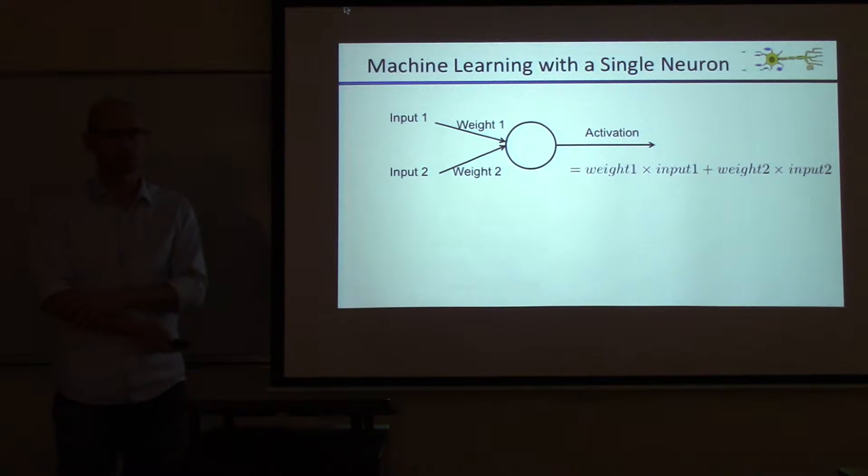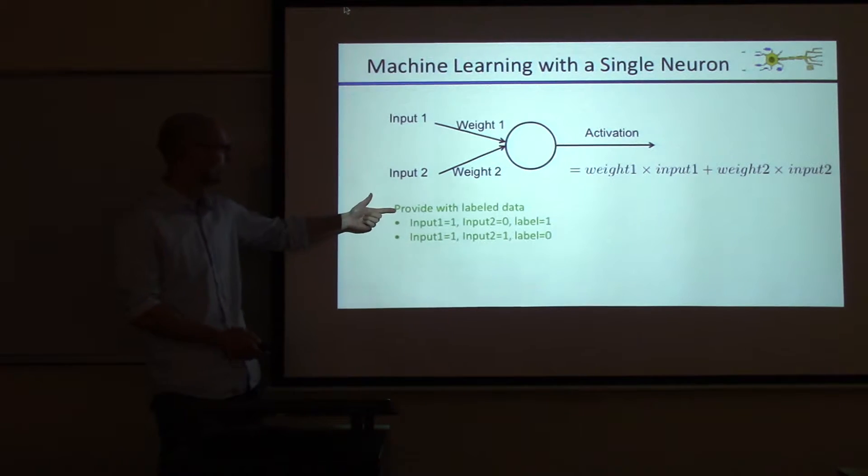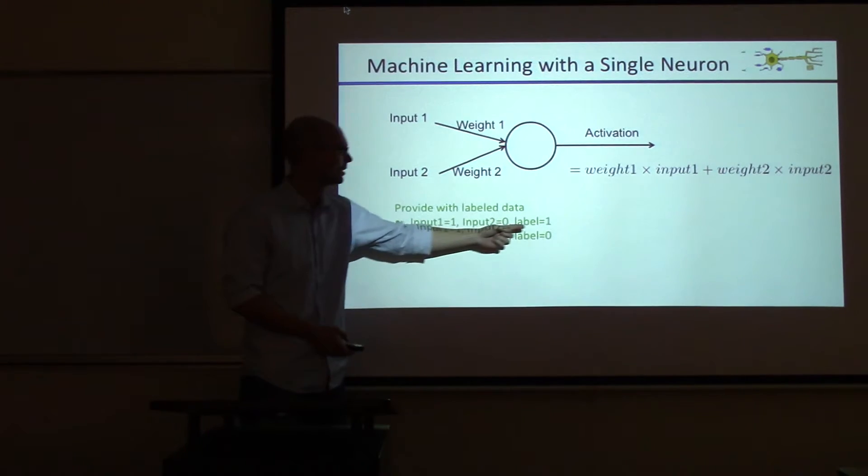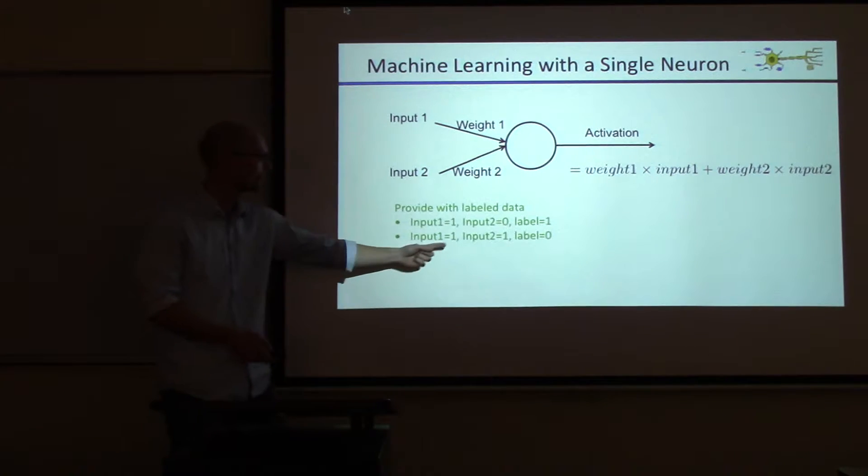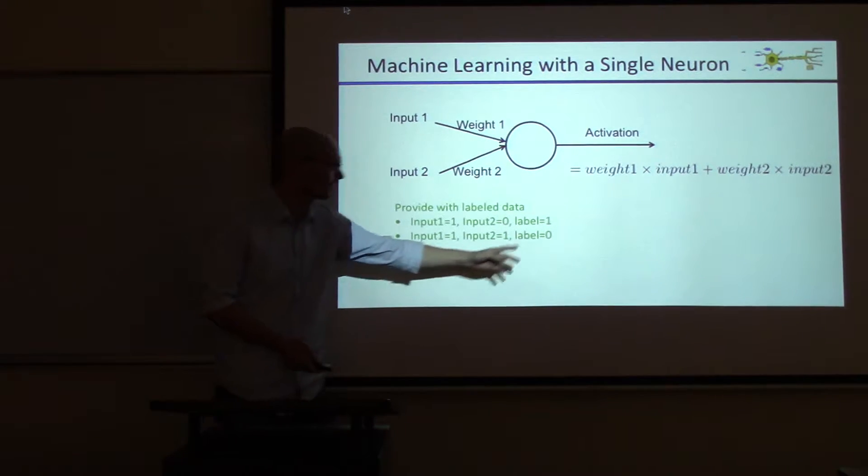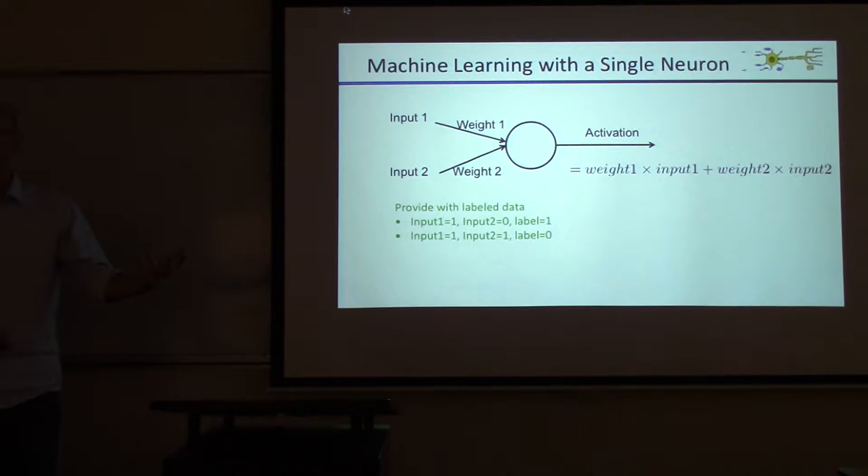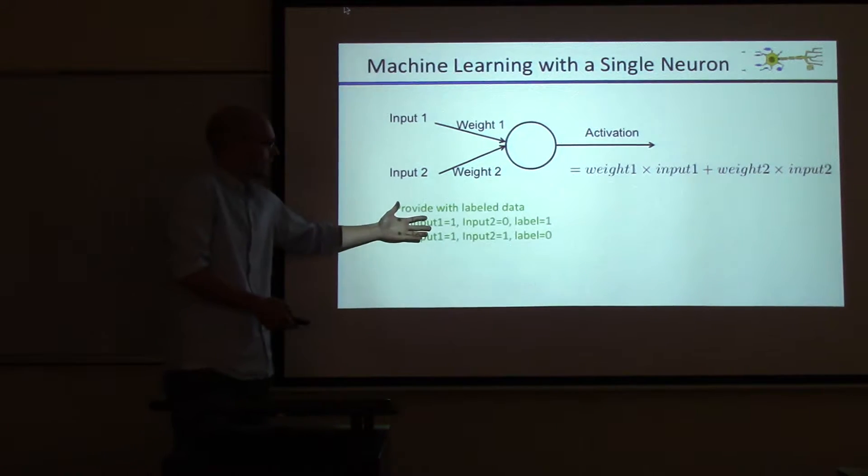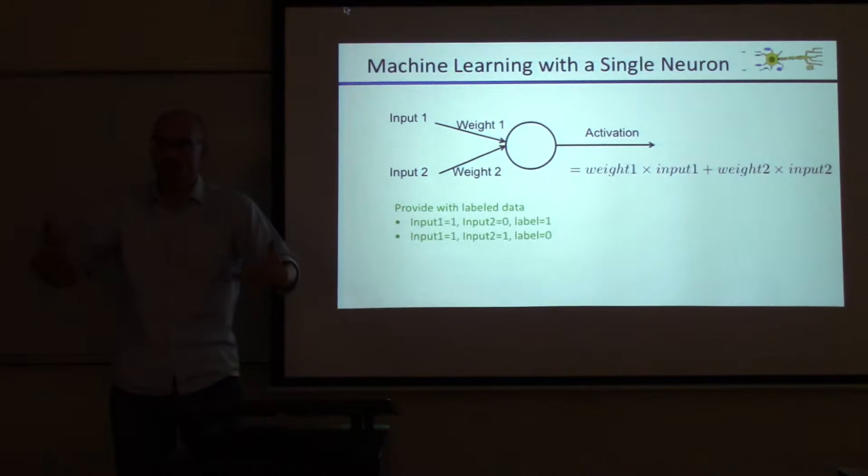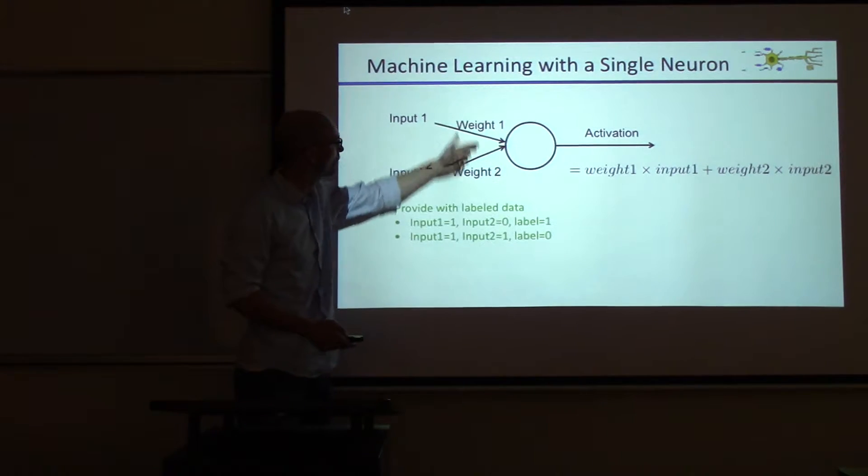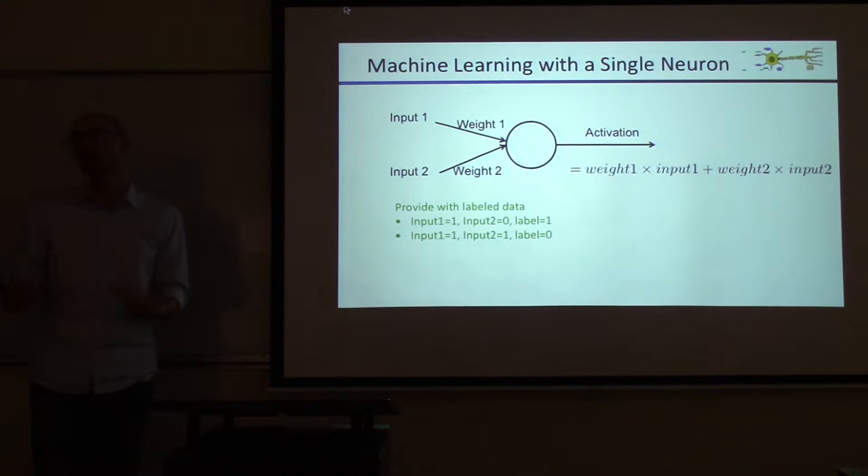If you want to do machine learning with a single neuron, we can now do this. It means to choose a good set of weights, and you learn those weights from examples. Let's say you get examples: input one is one, input two is zero, and the output you want is one. Input one is one, input two is one, then the output is zero. You can say that's actually input one minus input two. A neuron that sees this type of data would say weight one is one, weight two is negative one, and that way you can explain the data.